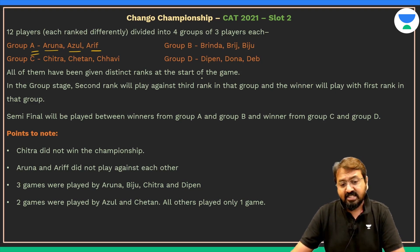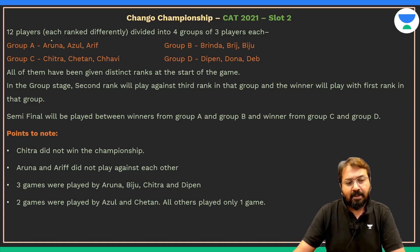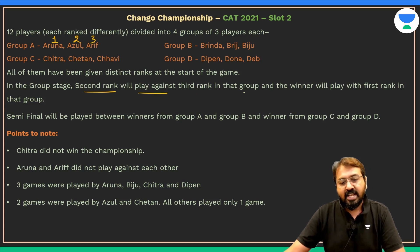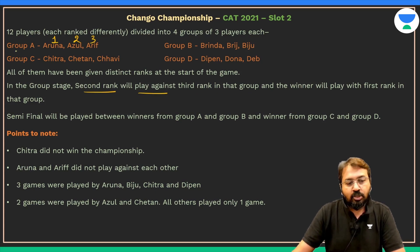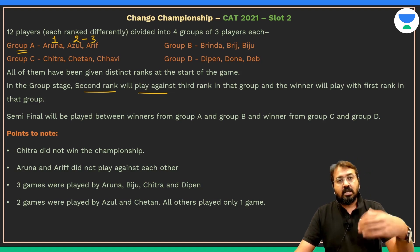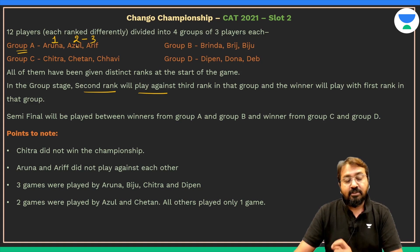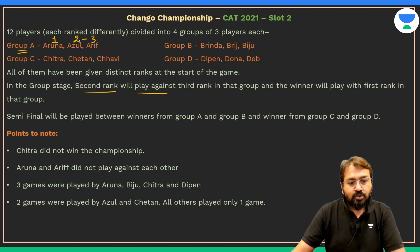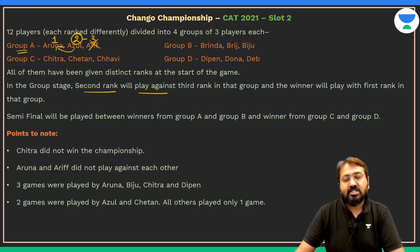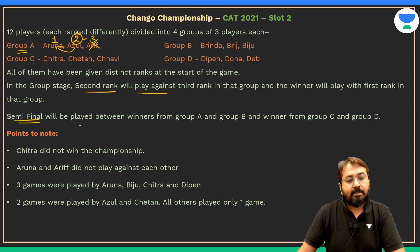All players have been given distinct ranks at the start of the game. For example in Group A, suppose Aruna is ranked first, Azul second, and Arif third. The second and third ranked players play the first game — so Azul plays Arif. The winner then plays against Aruna in the second game. Suppose Azul won against Arif — Arif is eliminated, and Azul plays Aruna.